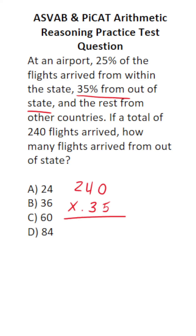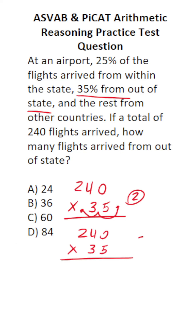In order to proceed, we're going to shift the decimal in 0.35 two times to the right to make this 240 times 35, albeit with two decimal places to move back into our answer when we're done.